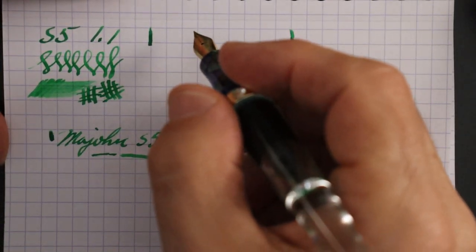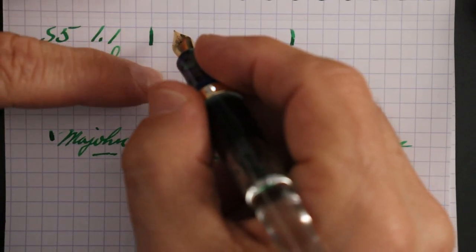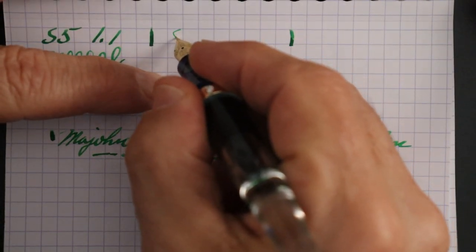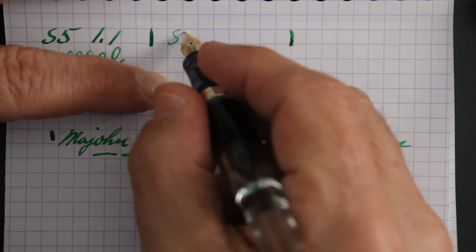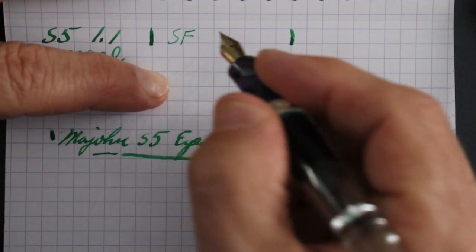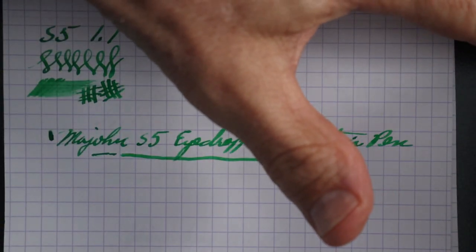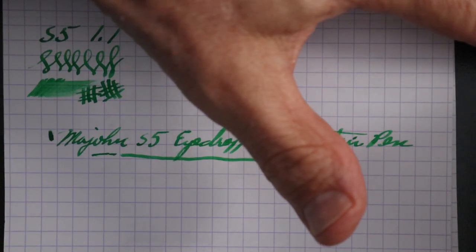All right, now this is supposed to be supposed to be a fine. I just inked this. I switched the nibs. Now let's see if I can get this nib flowing. I had to dip it.